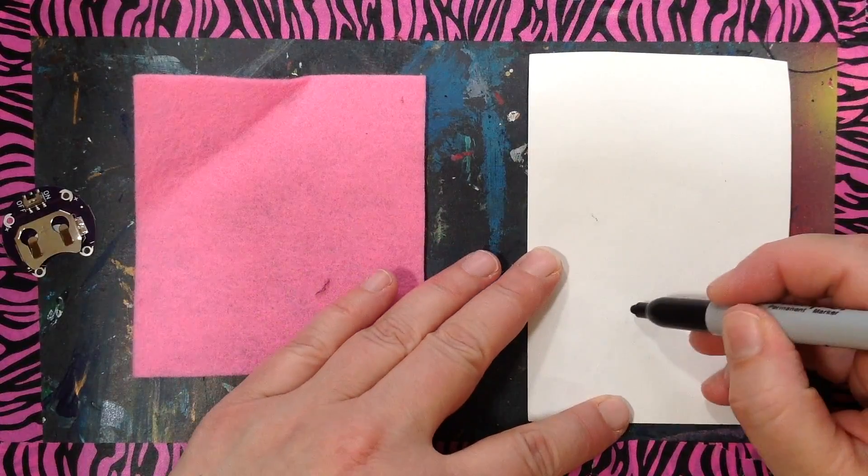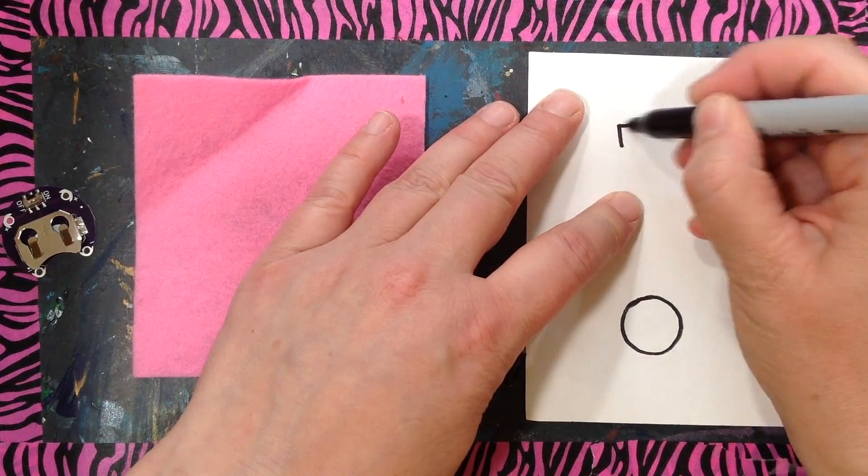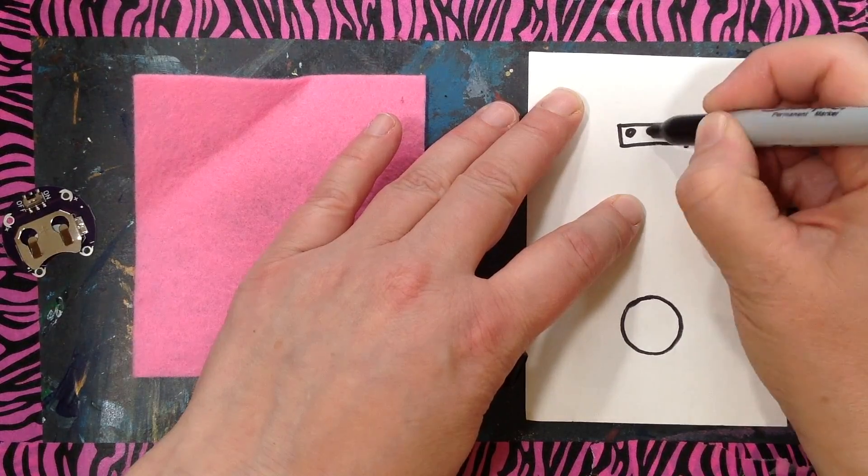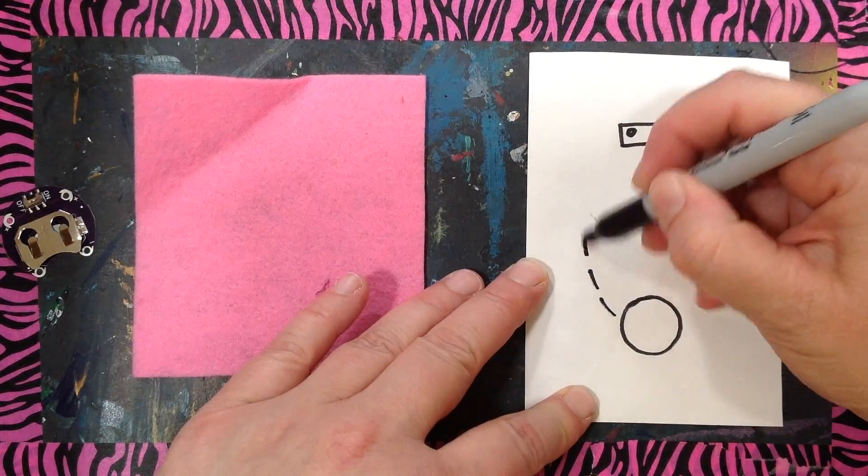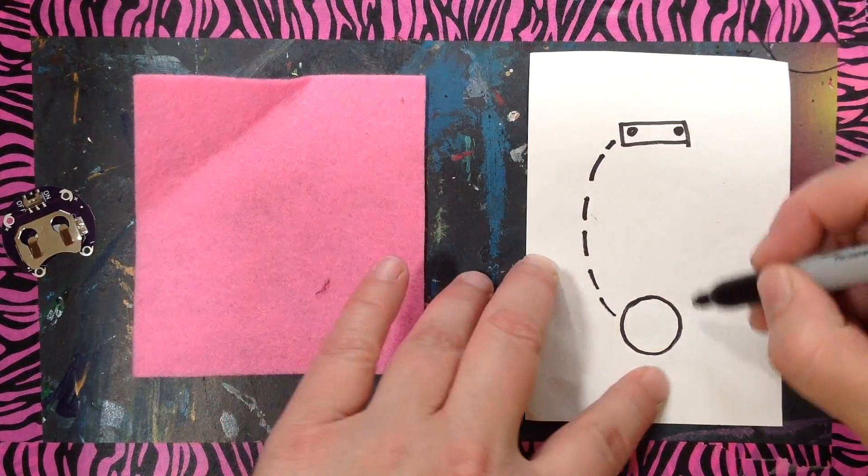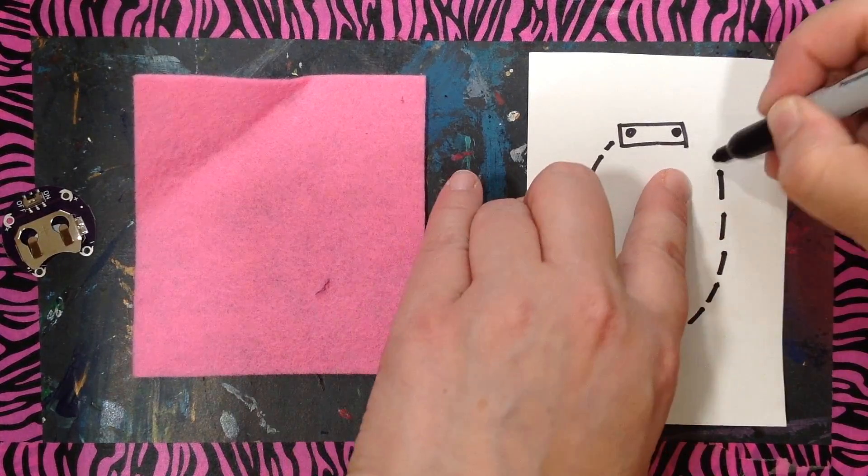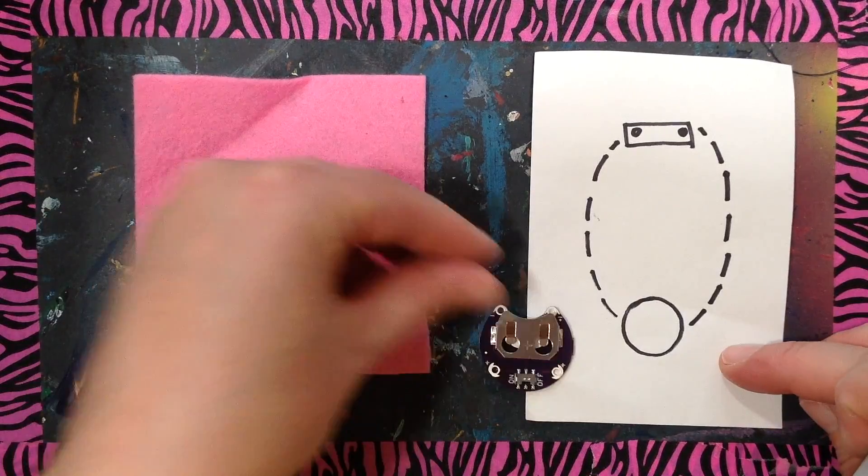So I've got my battery here. My LED light is going to go here and it's got two holes and then the light is in the center, and you're going to do a running stitch that connects the battery to the light.